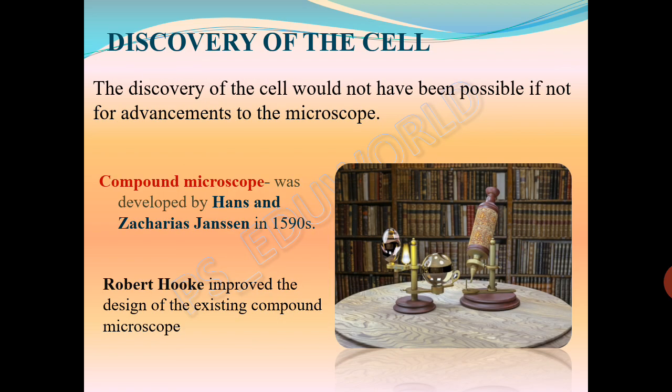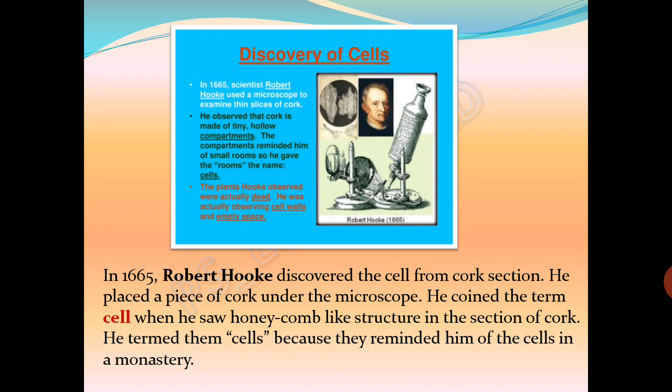Coming to the discovery of the cell: the invention of the microscope led to the discovery of the cell. In the 1590s, Hans and Zacharias Janssen developed the compound microscope. Then, in the year 1665, Robert Hooke improved the design of the existing compound microscope, and with this improved microscope he observed the cell for the first time — he discovered the cell for the very first time.